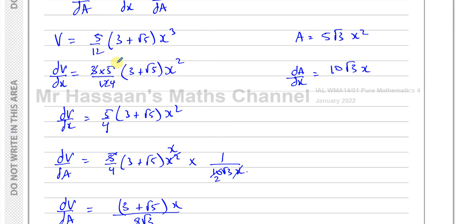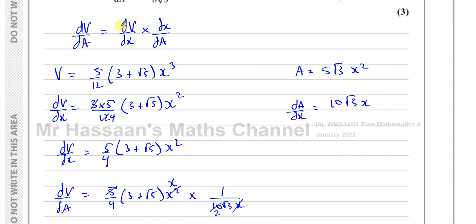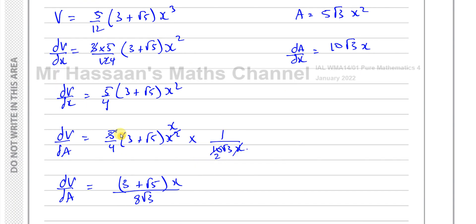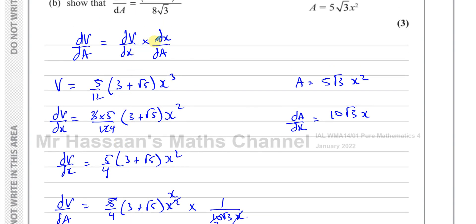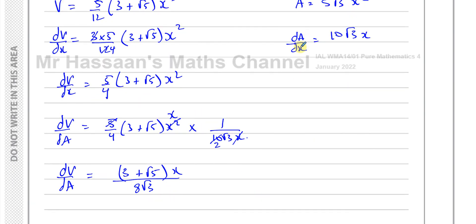We used the chain rule: dV/dA equals dV/dx times dx/dA. For dV/dx, just multiply by the power and take one from the power. Don't be confused by the constants — (3 + root 5) and 5 root 3 are just constants written in exact form. Multiply dV/dx by dx/dA, the reciprocal of dA/dx, and it comes out exactly as required.